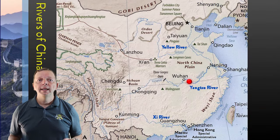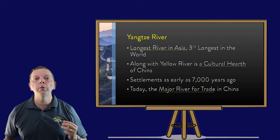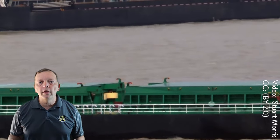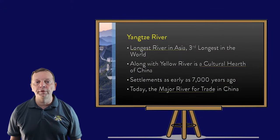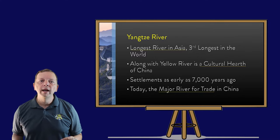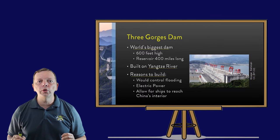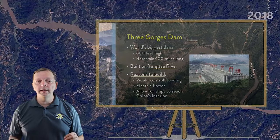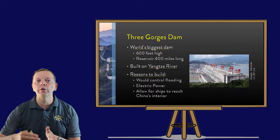To the south is the Yangtze River, the longest river in all of Asia and the third longest in the world. Settlements beginning around 7,000 years ago combined with the Yellow River civilization to become the cultural hearth of China. Today, the Yangtze is the major river for trade and supports nearly one-third of China's 1.4 billion citizens. Because of similar flooding problems, the Three Gorges Dam was built over nine years between 1994 and 2003, and as the world's largest dam, it stands over 600 feet high with a reservoir extending 400 miles.